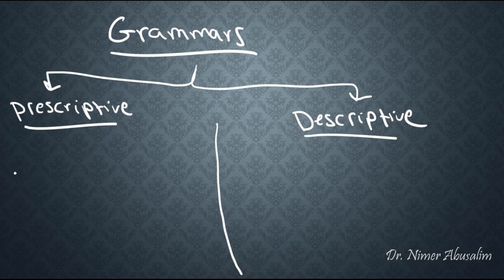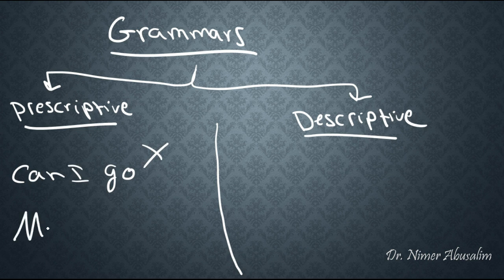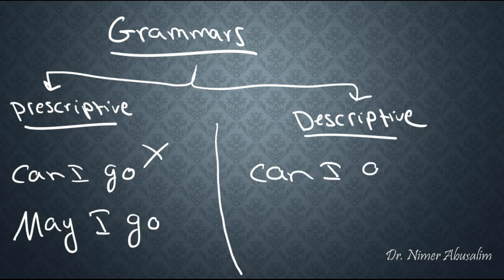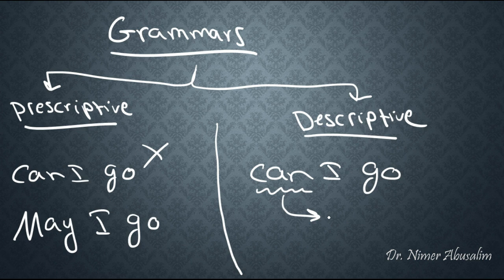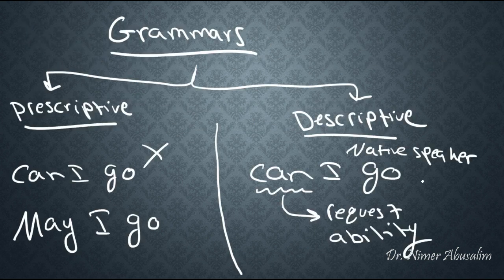So here's why these two grammars differ. The prescriptive grammar would say no — saying 'Can I go to the bathroom?' is incorrect; what you should say is 'May I go.' A descriptive grammar approaches the same issue and says okay, this is how native speakers use the language — they say 'Can I go to the bathroom?' And so they would take that as a starting point and suggest that maybe can can also mean to make a request, in addition to meaning ability. So for the descriptive grammar the starting point is the native speaker, whereas for prescriptive grammar the starting point is just some things you see in grammar books.